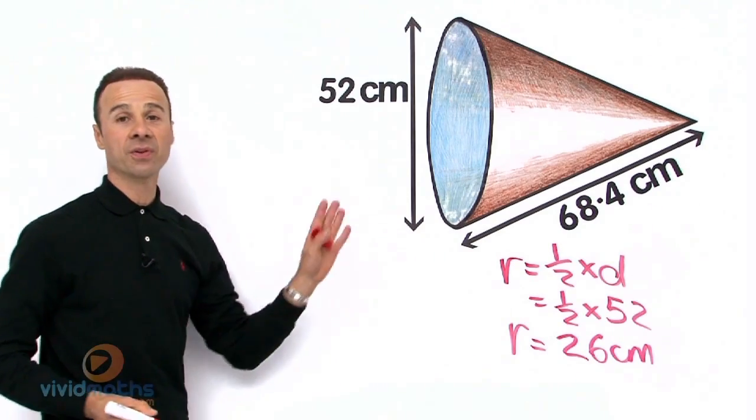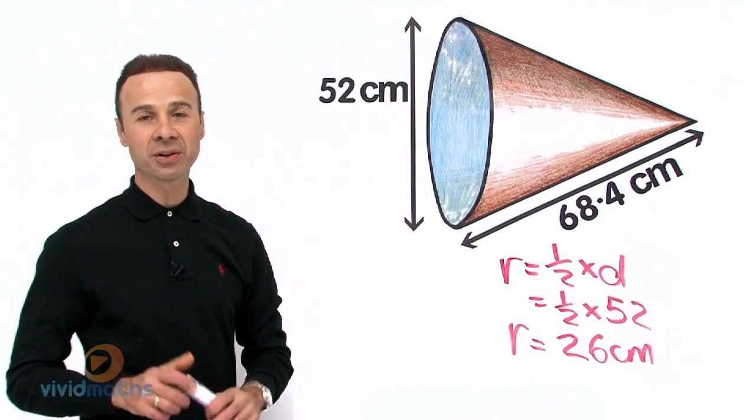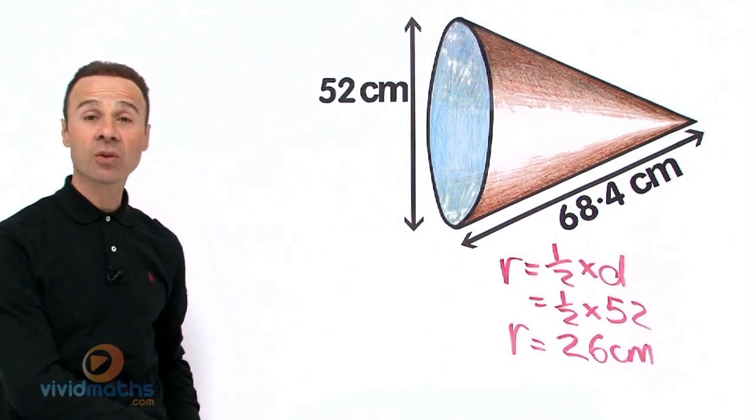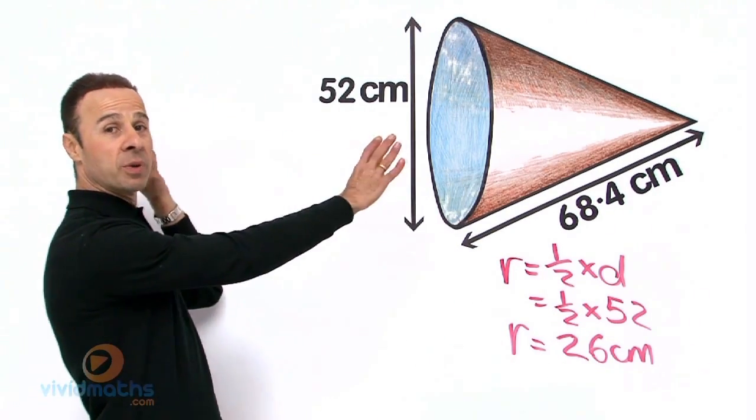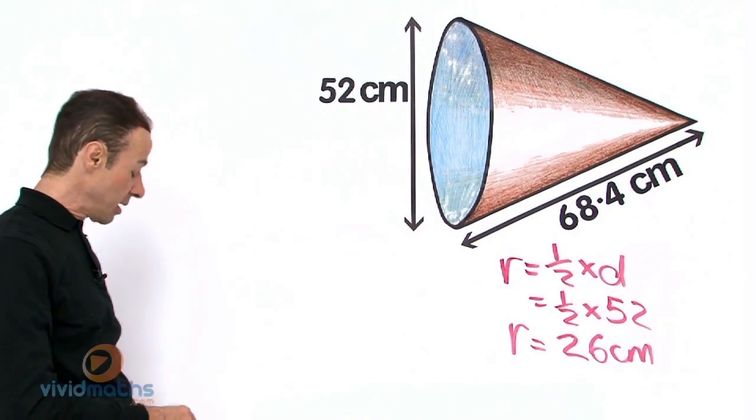So the radius for this cone is 26 centimeters. That is really useful and worthwhile to know because the formula needs the radius in there. Now the good news, as I said, the formula is one complete formula and you just put all the values in. It will give you the whole complete surface area, so let's do that now.